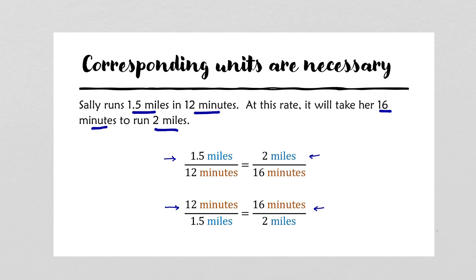When you set up a proportion, it is imperative that your units correspond across the proportion. If miles are on top in the first ratio, they should be on top in the second ratio.